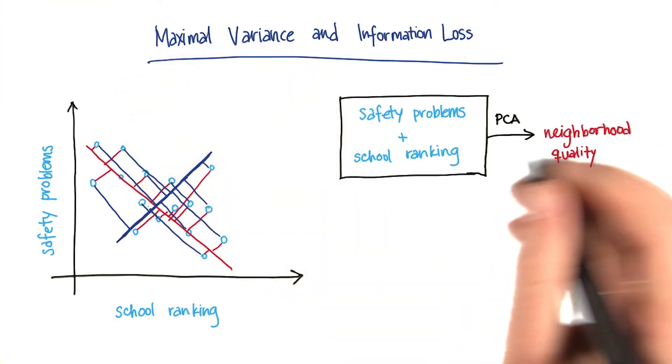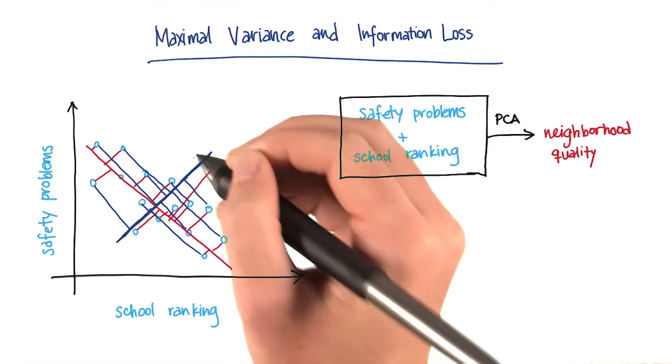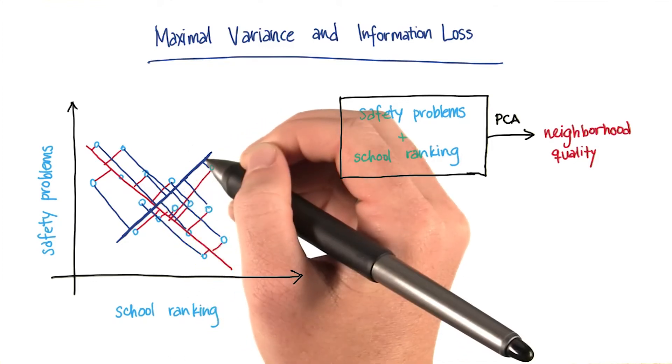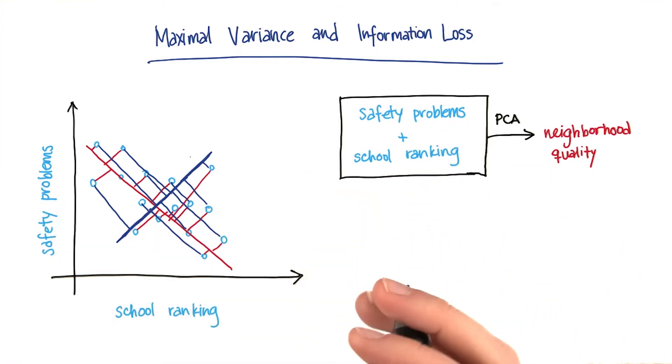And it's a little bit cluttered, but I hope what you can see is that on average, these purple lines are all going to be significantly longer than the red lines. For any given point, that might not be true, but for the points in aggregate, it will be true.